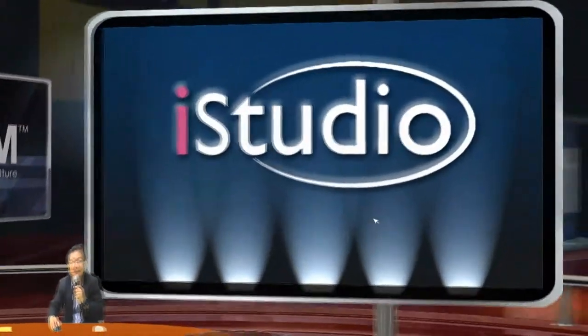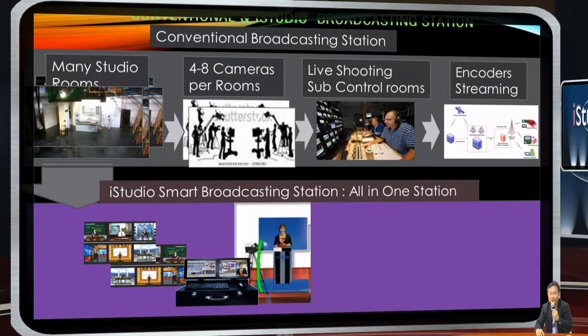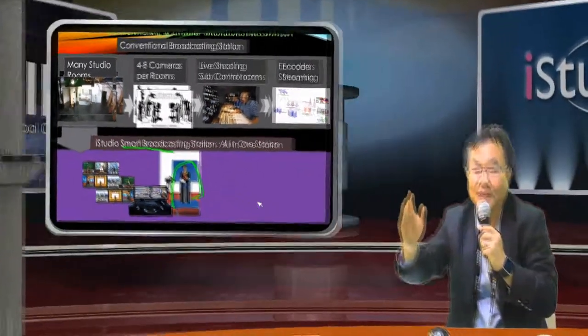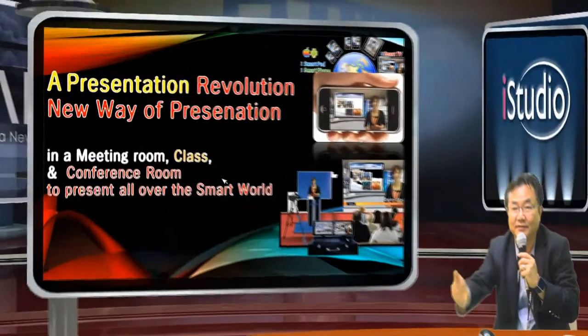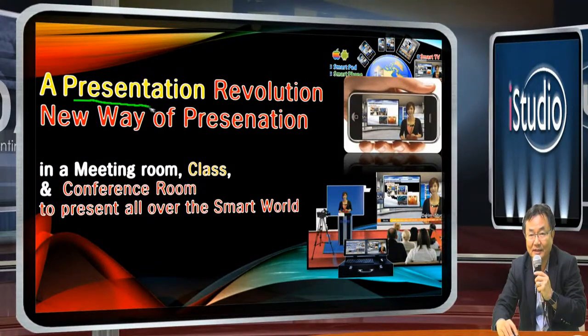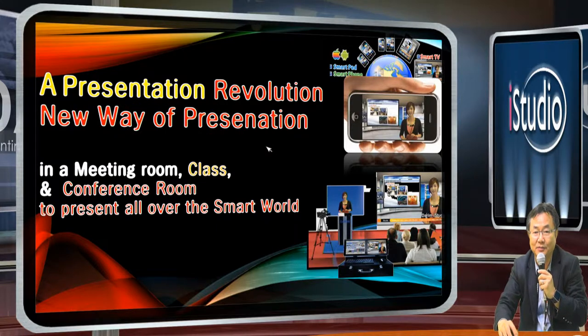That's the way we invented this machine so that any person can operate it by themselves. They can change the screen and manage all the different things. This machine has a studio where you can make a complete smart broadcasting station. Once you make this presentation, you can reach everywhere in the world. Now I am using my notebook to have a different slide — this is not only a station, it's a presentation device for a new way of presenting in the smart world.